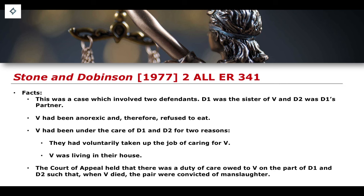The Court of Appeal held that there was a duty of care owed to the victim on the parts of D1 and D2, such that when the victim died, the pair were convicted of manslaughter. There was a legal duty to act in a way to ensure the victim did not die of anorexia, and this was breached by their failure to act in that particular way — and that failure to act caused the victim to eventually die from their condition. Criminal liability arose from the failure to perform a certain action: an omission.